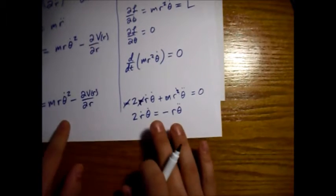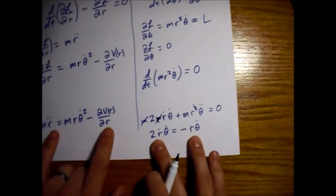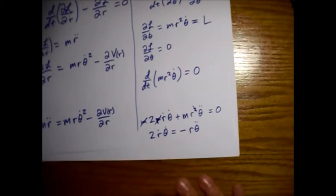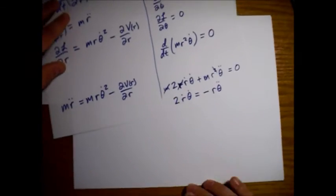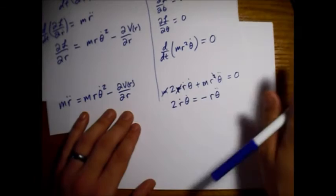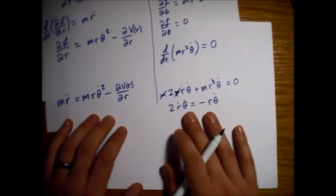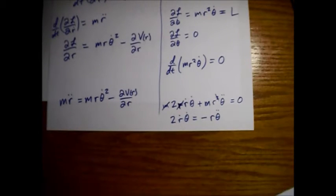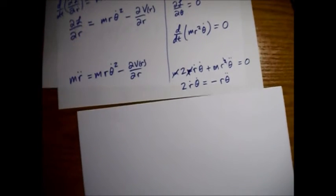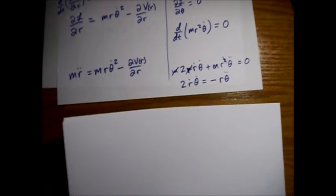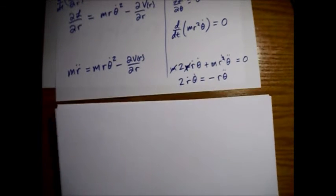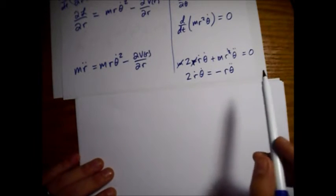These are our two equations of motion, and they hold for any central force — as long as there's no friction or other dissipative effects. So if your planet's orbiting through dust clouds or something, you'd need to modify this.